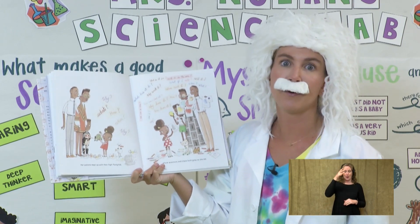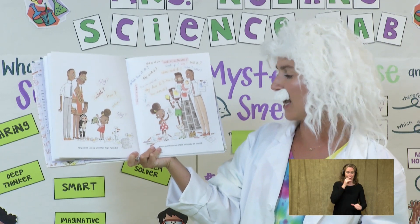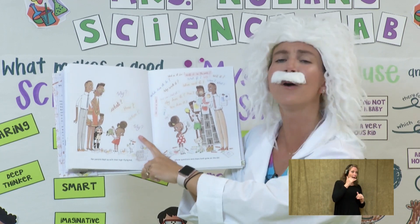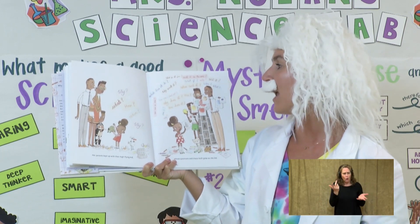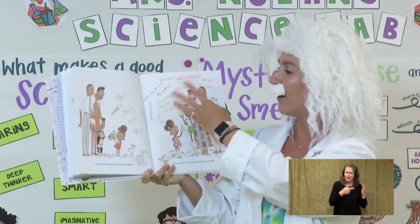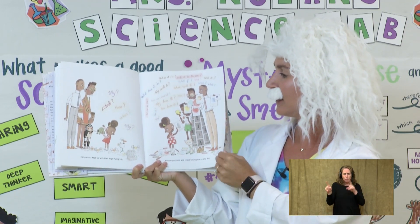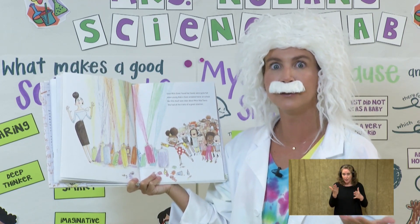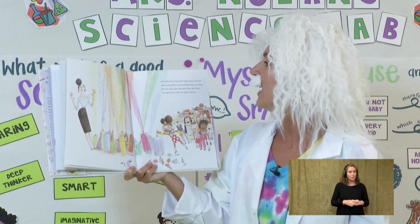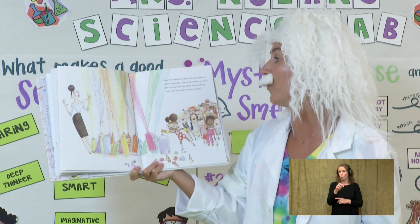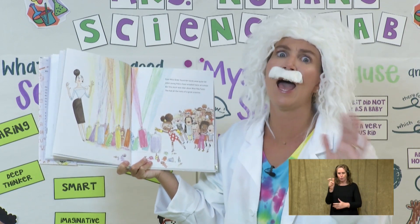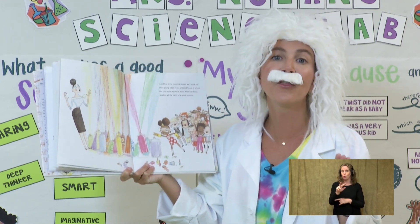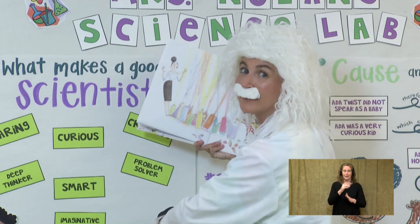Her parents kept up with their high-flying kid whose questions and chaos both grew as she did. Why? What? How? When? What is it for? She had a lot of questions. And in order to figure something out, we have to ask a question. Even Miss Greer found her hands were quite full when young Ada's chaos wreaked havoc at school. But this much was clear about Miss Ada Twist — she had all the traits of a great scientist.